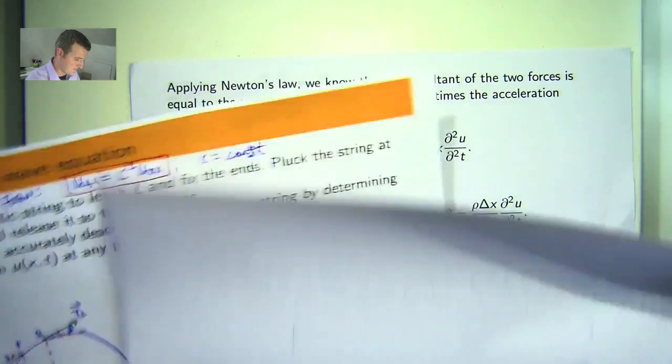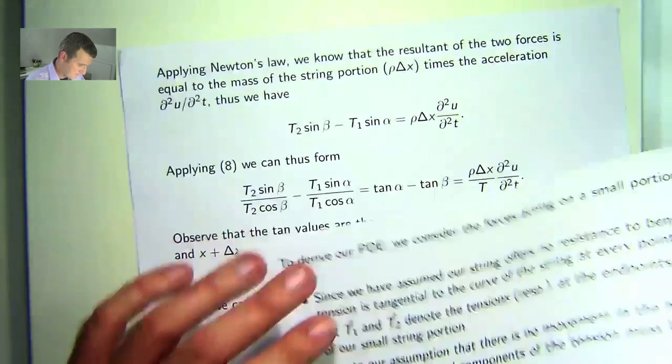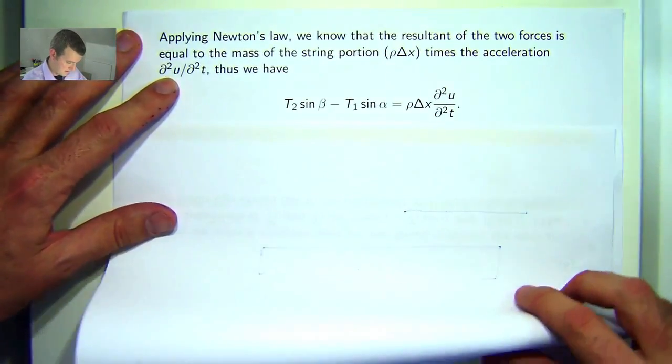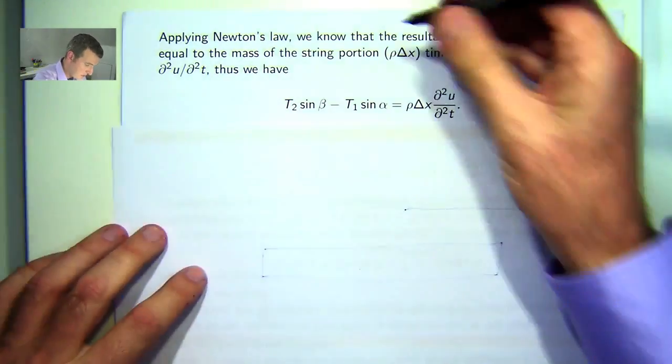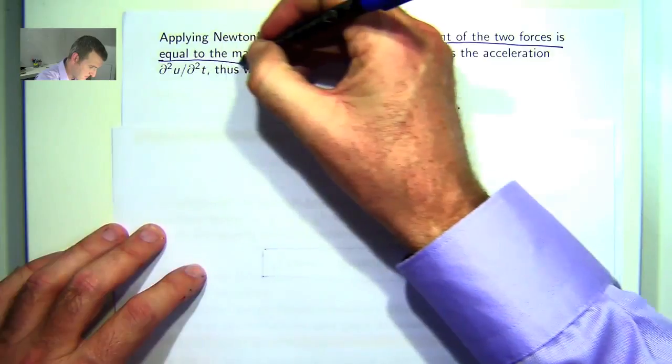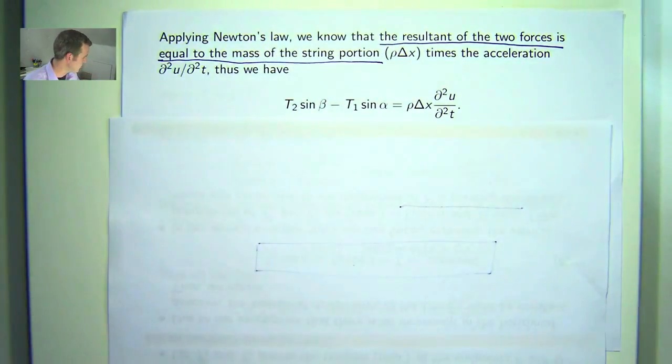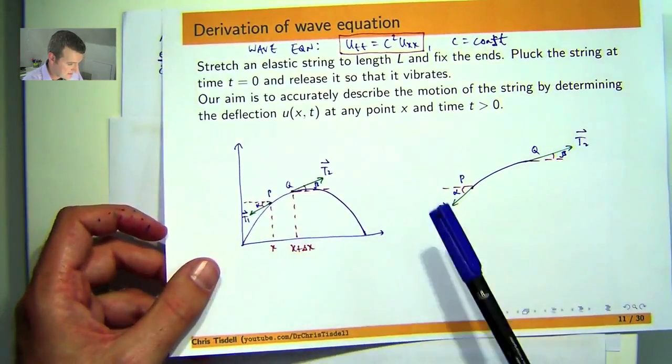If we apply Newton's law, f equals ma, we know that the resultant of the two vertical forces is equal to the mass of the string portion. The mass of the string portion is rho times delta x, where rho is the density function. The mass of the string portion times the acceleration.